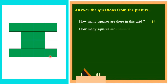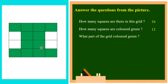Next question: how many squares are colored green? Count the total number of squares colored green — 1 through 12 — so totally 12 squares are colored green. What part of the grid is colored green? Totally there are 16 squares, and out of 16 squares, 12 parts are colored green. So we can say 12 parts out of 16 equal parts, that is 12 by 16.